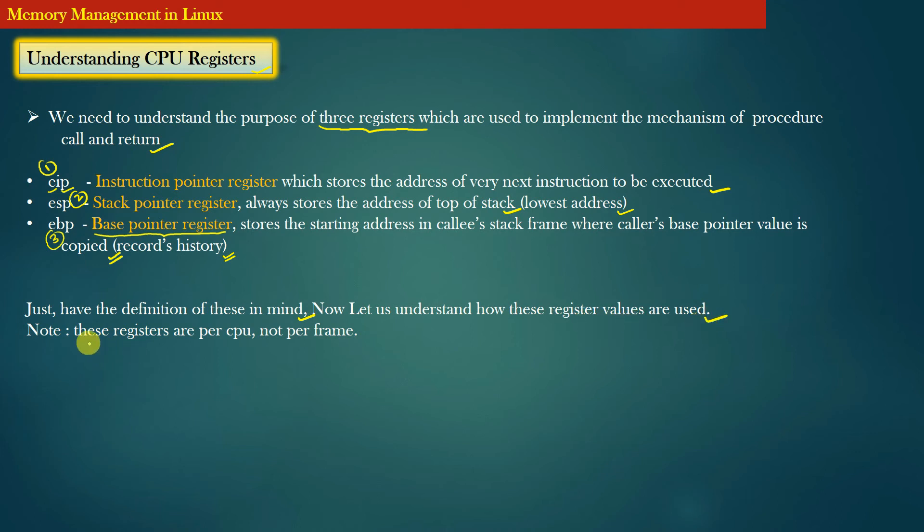Now let us understand how these three basic registers are used. Also note that there is only one instance of these registers per CPU. These registers are not per frame. These registers are actual pieces of small hardware chips which are embedded on your motherboard. So these registers are the same as memory which stores the data.